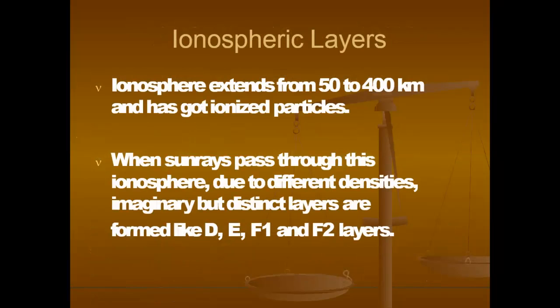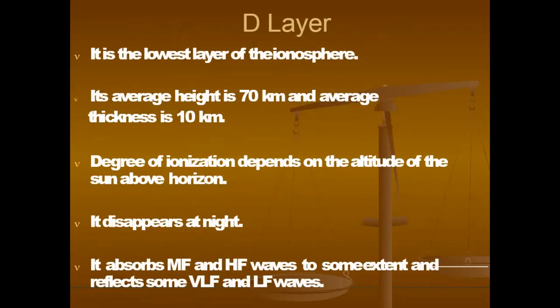What are the ionospheric layers? The ionosphere extends from 50 to 400 km and contains ionized particles. When sun rays pass through the ionosphere, due to different densities, imaginary but distinct layers are formed: D layer, E layer, F1 and F2 layers. The D layer is the lowest layer of the ionosphere — its average height is 70 km and average thickness is 10 km. The degree of ionization depends on the altitude of the Sun above the horizon; it disappears at night. It absorbs medium frequency and high-frequency waves to some extent and reflects some VLF and LF waves.